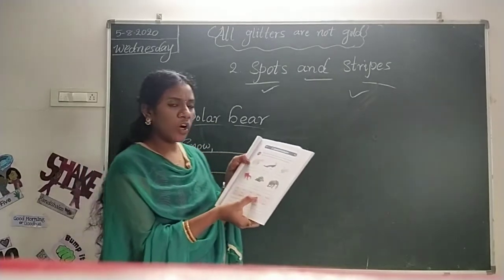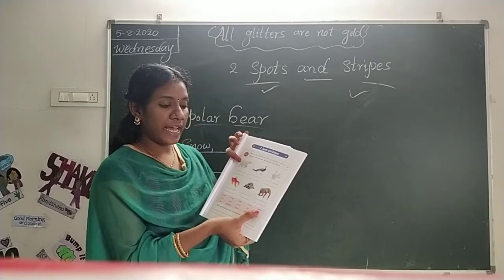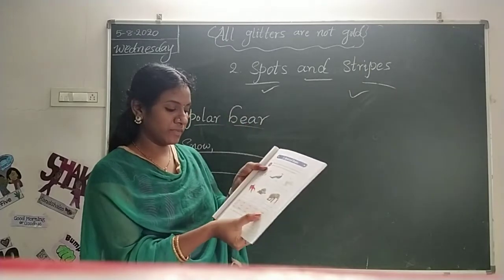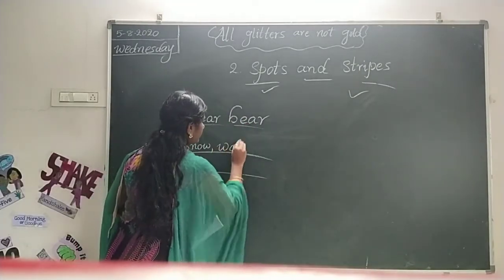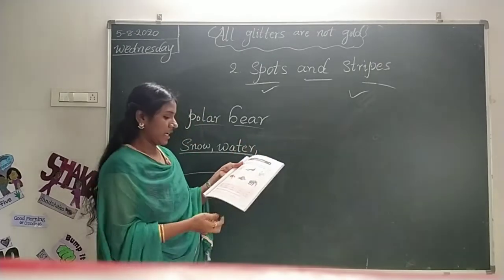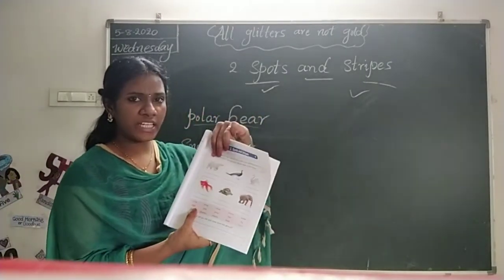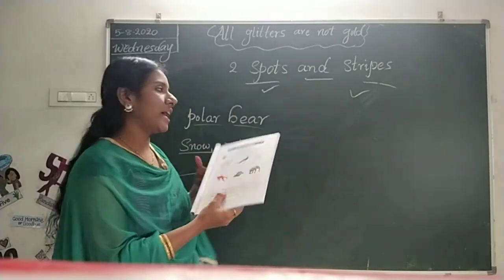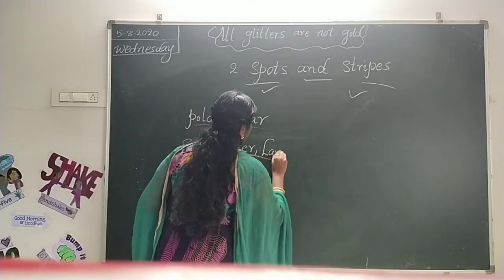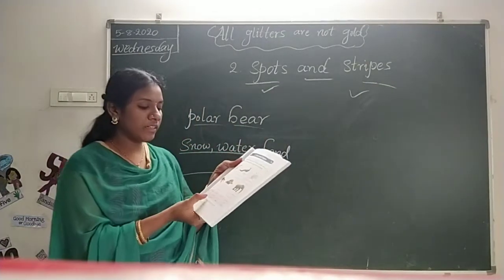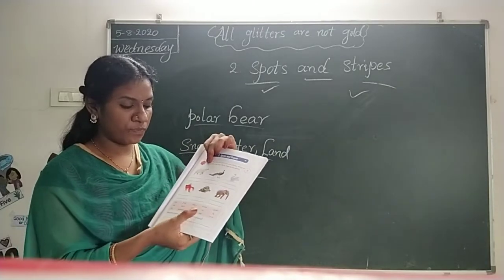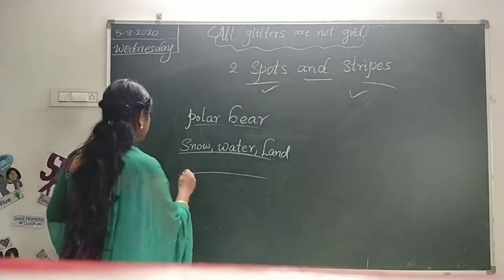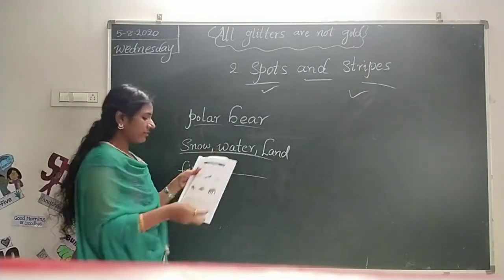And the next word — water. Yes, polar bears can live in water and on land. So we write water. And the next one — land. Yes, polar bears can live on land. And they can eat fish. So we write fish.